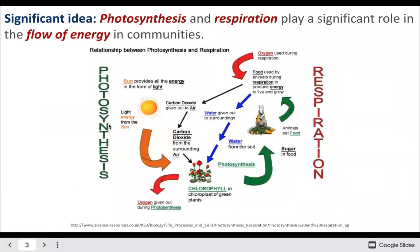Photosynthesis and respiration play a huge role in the flow of energy. Photosynthesis takes energy in the form of sunlight and turns it into matter — in this case glucose or sugars, which is why we like to eat plants. Respiration is the opposite process, where we take that glucose and turn it into energy we can use to live and grow, though most of that energy is used for living, not growing.